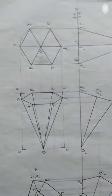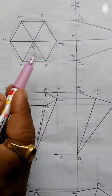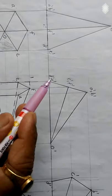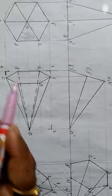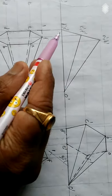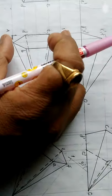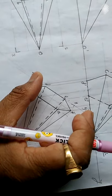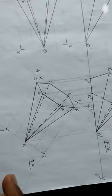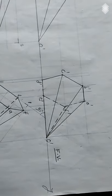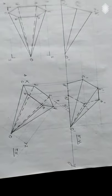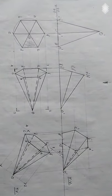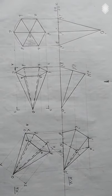The projection is complete. As per the narration, the solid is resting on the triangular lateral surface on the HP, and the base edge D containing that lateral surface is making an inclination of 50 degrees with the VP. The actual top image and the actual front view — the elevation and plan — have been obtained. The entire projection of this hexagonal pyramid has been completed.